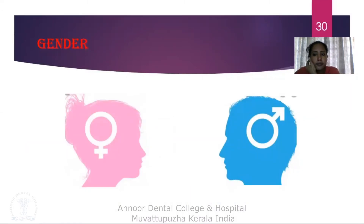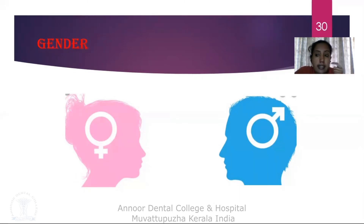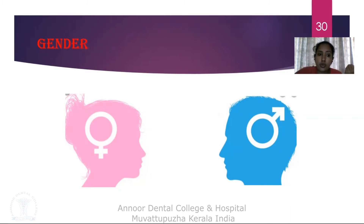Coming on to the next factor, which is gender. Males have poorer oral hygiene than females and higher plaque scores, mainly because females are more conscious and regularly maintain their teeth. Because of this, males have a greater chance of developing periodontitis. The gender difference in prevalence and severity of periodontitis appears to be related to preventive practices rather than any genetic factors, so females are less prone to periodontal disease due to their preventive practices.